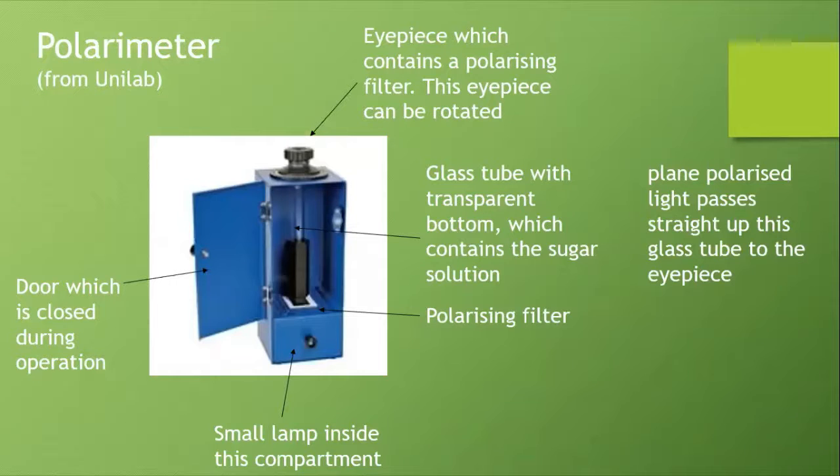Now, my polarimeter here. Let's look at the left hand side. There's a door which is closed during operation to prevent light from outside interfering. At the bottom, there's a small lamp inside a compartment. The eyepiece contains a polarizing filter and this can be rotated. There's a scale, a marker, so we can measure how many degrees that eyepiece has been rotated through. In the middle, we see a glass tube with a transparent bottom, which contains a sugar solution. Plane polarized light will pass straight up this glass tube to the eyepiece. But why is that light plane polarized? Because at the bottom, we've got a polarizing filter. We've got two polarizing filters, one in the eyepiece and one down below.